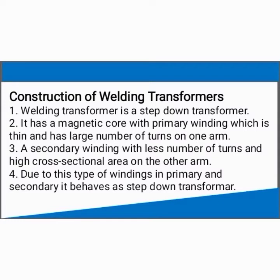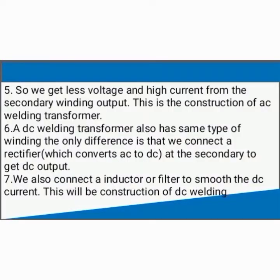Construction of welding transformers. First, a welding transformer is a step-down transformer. Second, it has a magnetic core with primary winding which is thin and has a large number of turns on one arm. Third, a secondary winding with less number of turns and high cross-sectional area on the other arm. Fourth, due to this type of windings in primary and secondary, it behaves as a step-down transformer. Fifth, so we get less voltage and high current from the secondary winding output. This is the construction of an AC welding transformer.